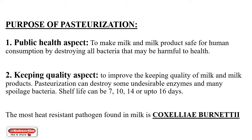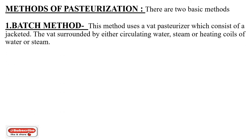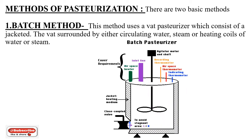What are the methods of pasteurization? There are two basic methods. The first is the batch method. This method uses a vat pasteurizer, which consists of a jacket — as you can see in the diagram — with the vat surrounded by either circulating water, steam, or heating coils of water or steam.